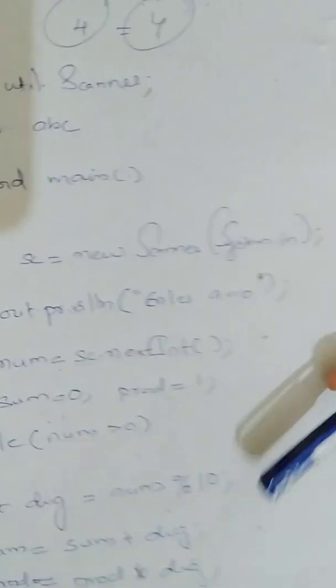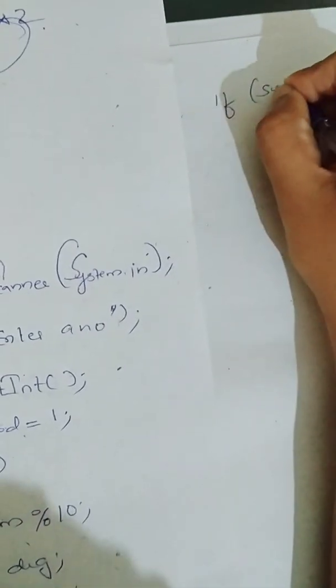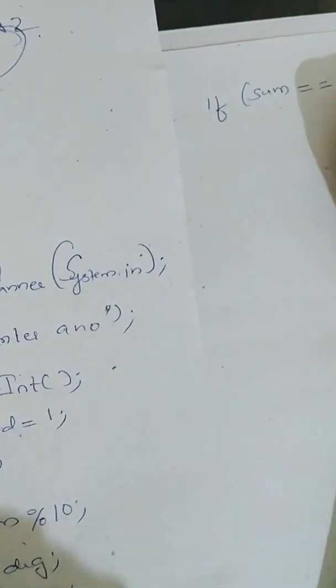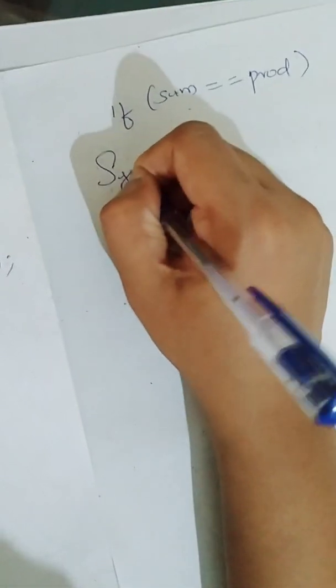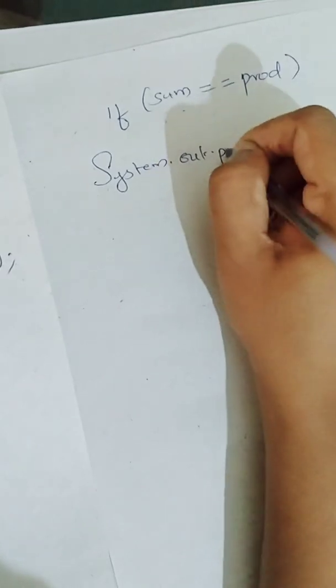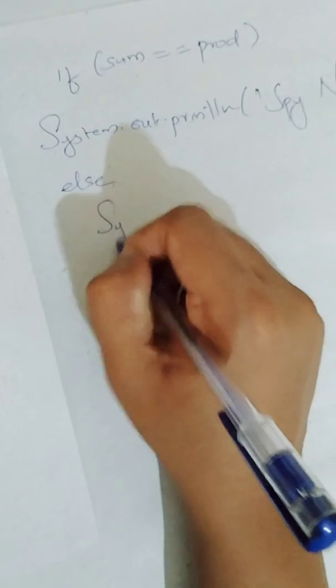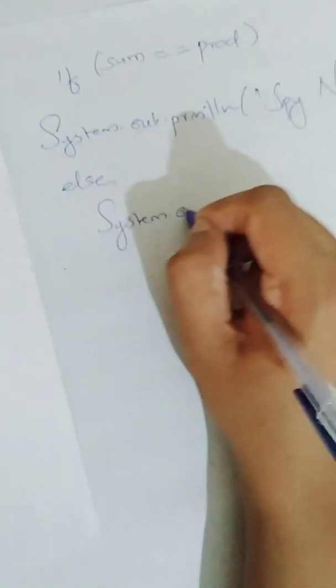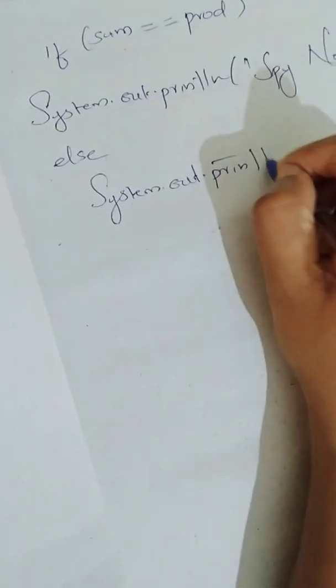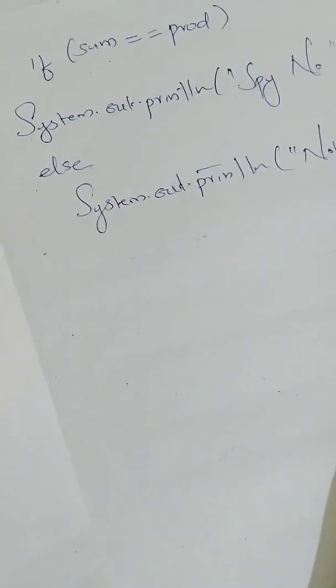Then outside loop, you will check if sum is equal to equal to product. Then system.out.println, it's a spy number. Else, system.out.println, not a spy number.